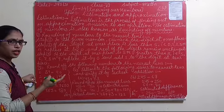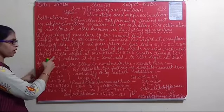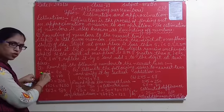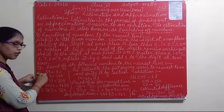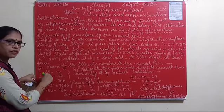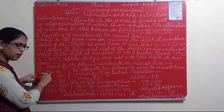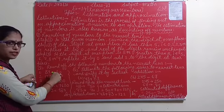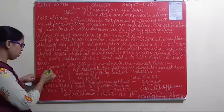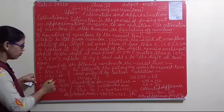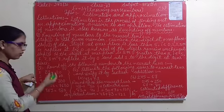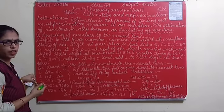9 is greater than 5, so we follow step three. The one's digit is replaced by zero, and one carry is added to the ten's place. The ten's digit is 8, so 8 plus 1 gives 9. Therefore 89 rounded to the nearest 10 is 90. This is very easy — listen carefully and you will understand well.